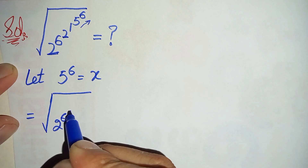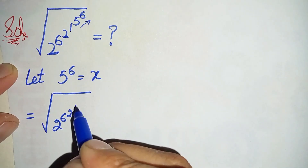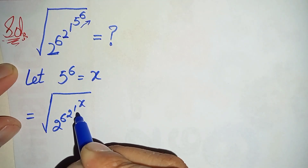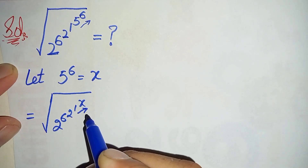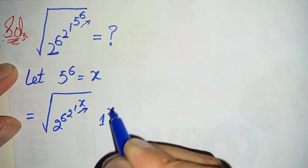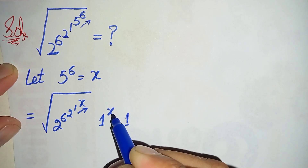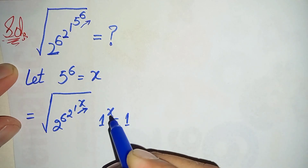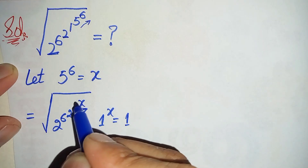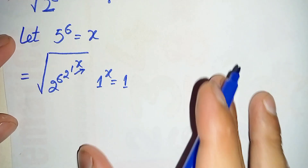So this becomes the square root of 2 raised to power 6, raised to power 2, raised to power 1 raised to power x. Now we will solve 1 raised to power x. As we know, 1 raised to power x is always equal to 1, because multiplying 1 any number of times always gives 1. So we replace 1 raised to power x with 1.